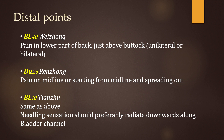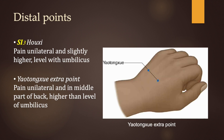The main distal points are as follows: Bladder 40, if the pain is in the lower part of the back, just above the buttock, whether unilateral or bilateral. DU 26, if the pain is on the midline or starting from the midline and spreading out. Bladder 10, also if the pain is on the midline or starting from the midline and spreading out — the needling sensation should preferably radiate downwards along the bladder channel. SI 3, if the pain is unilateral and slightly higher, roughly level with the umbilicus. The extra point Yao Tongshui, if the pain is unilateral and in the middle part of the back, higher than the level of the umbilicus.